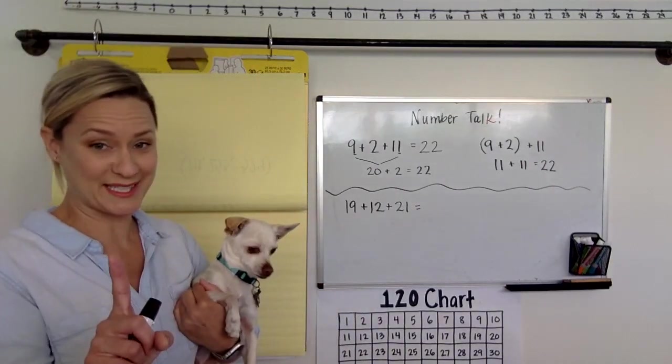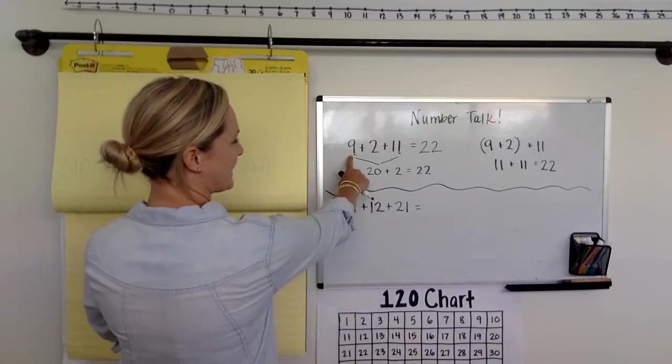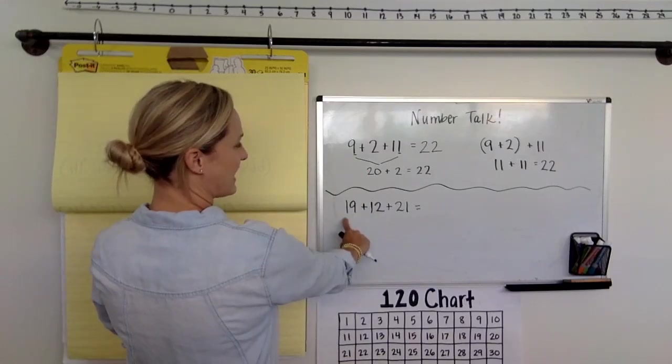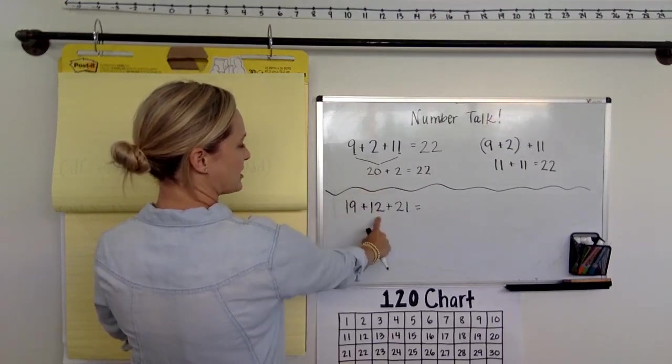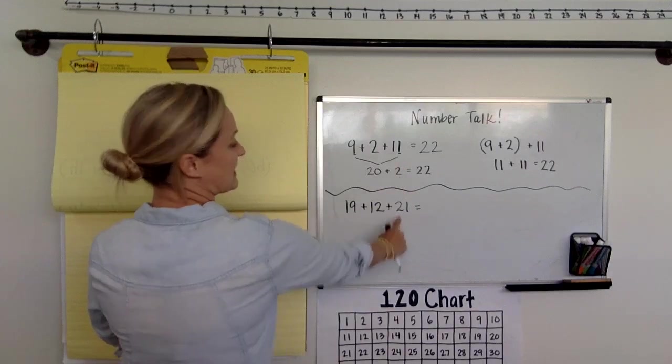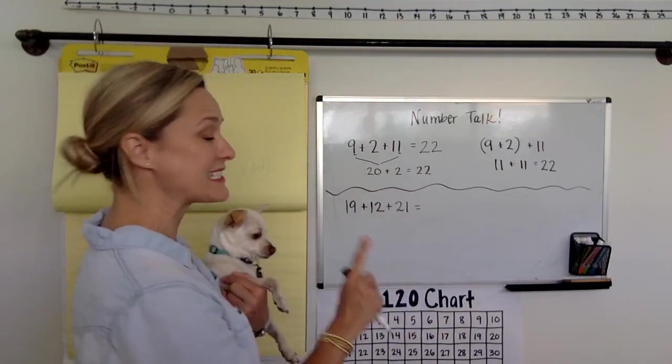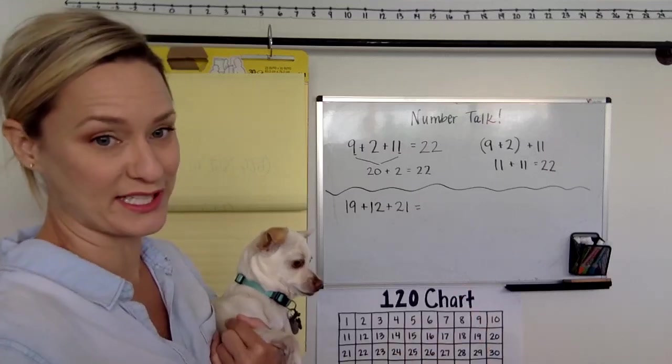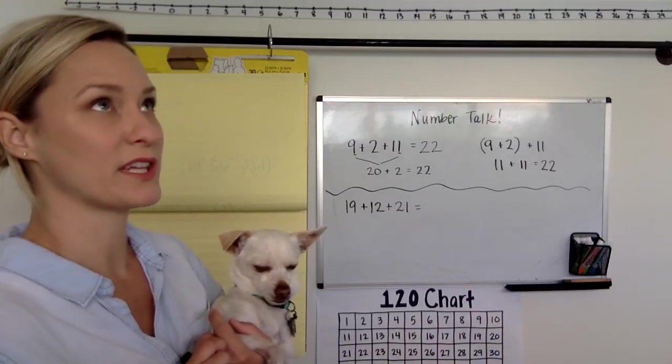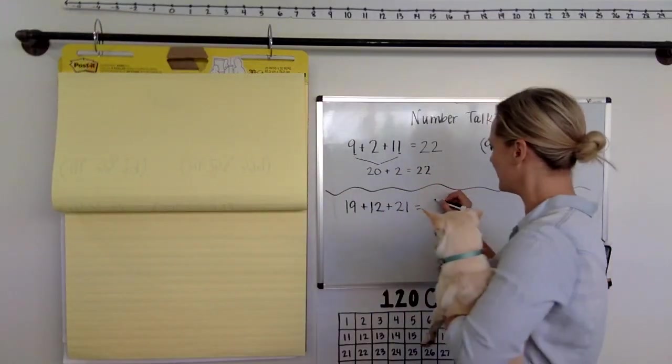So maybe some of you noticed I was sneaky deaky. Maybe some of you noticed that I kept the nine in the ones place, but I added a 10. And I kept the two, and I added another 10. And I kept the one, and I added another 10. So maybe you were like, ooh, it's going to be three tens more than 22. So maybe you were like, three tens more than 22 would be 52. So maybe that's how some of you solved it.